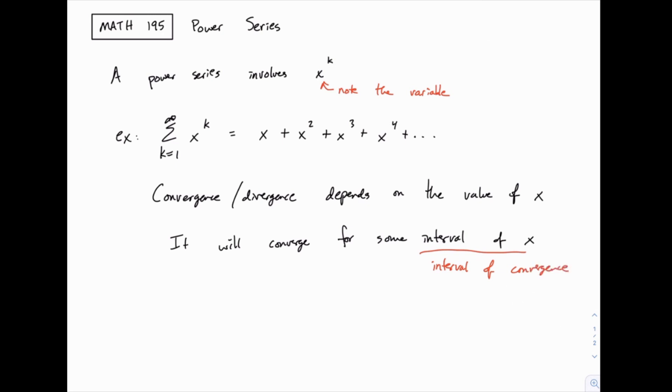For instance, for a specific example, we might find that the interval of convergence is from 2 to 5. So that means x values between 2 and 5 make it converge, and all other x values make it diverge. So again, that's the main question, finding this interval of convergence.